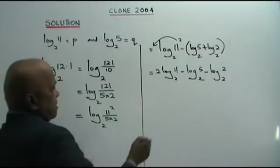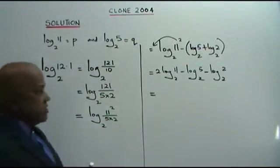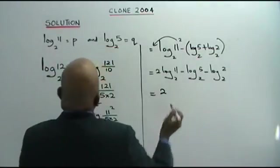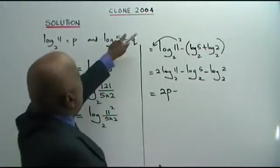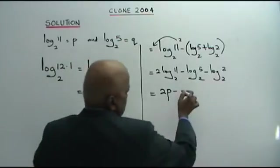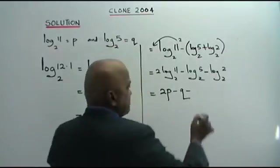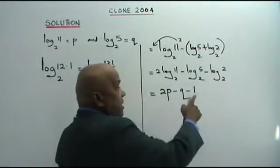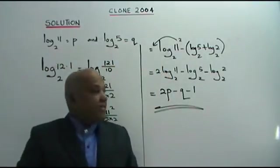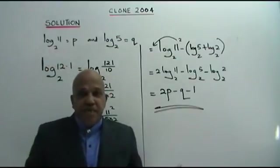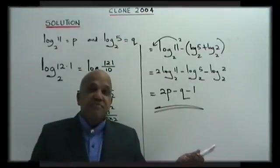Now we substitute P and Q. This is 2 times log 11 base 2 is P, 2P. Minus log 5 base 2 is Q. Minus log 2 base 2 is 1, using the law of logarithm. This is your answer in terms of P and Q. Get it? Thank you.